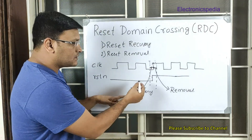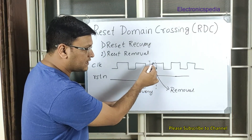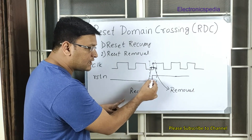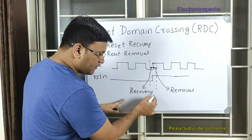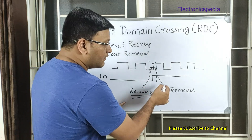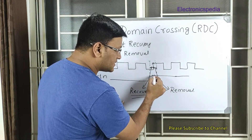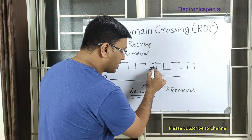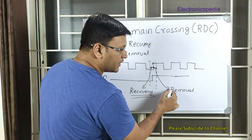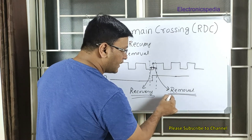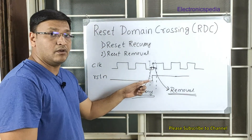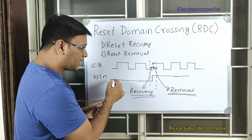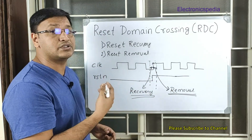Recovery is like setup: before the rising edge of the clock, the reset needs to be stable — that is called reset recovery. After the rising edge of the clock, the reset has to remain stable for some duration — that is called reset removal. This is applicable only for reset de-assertion.